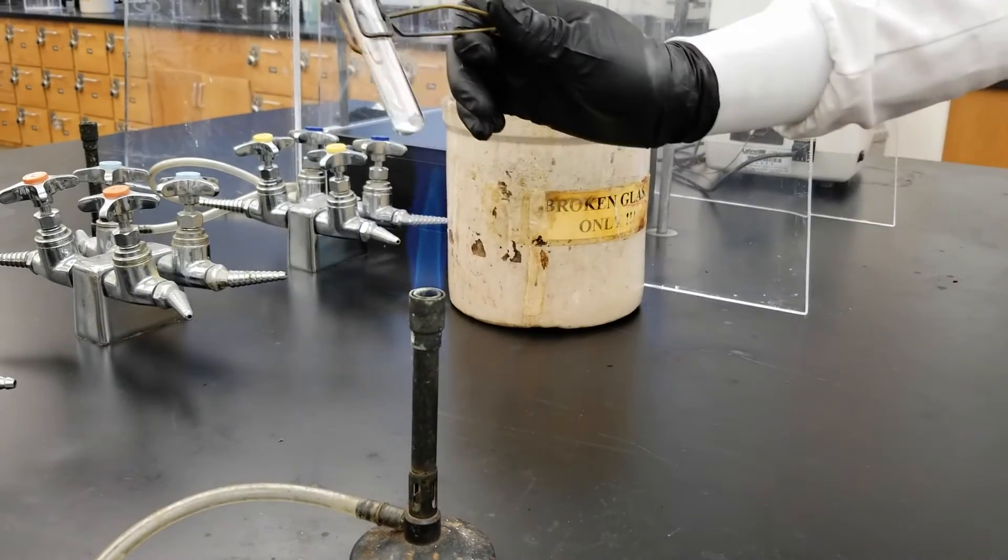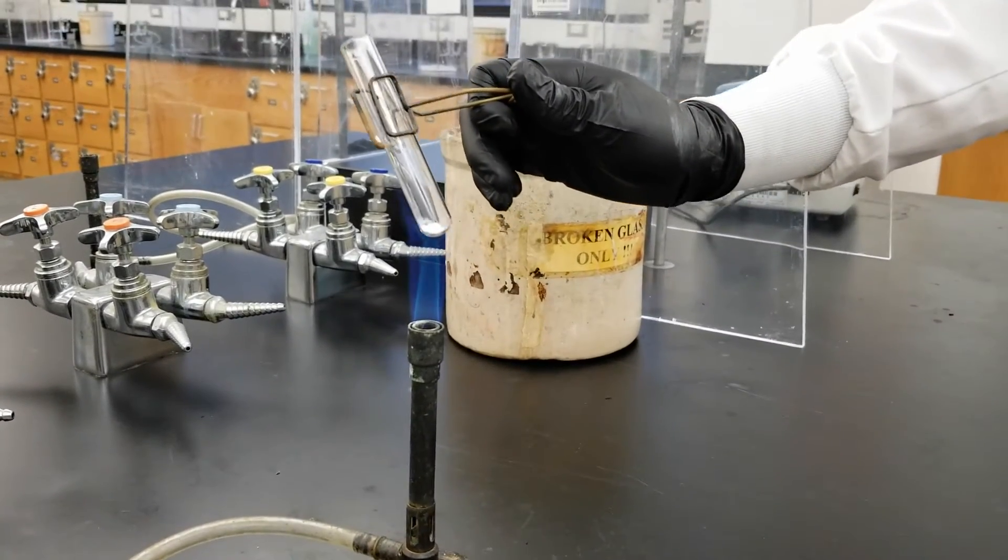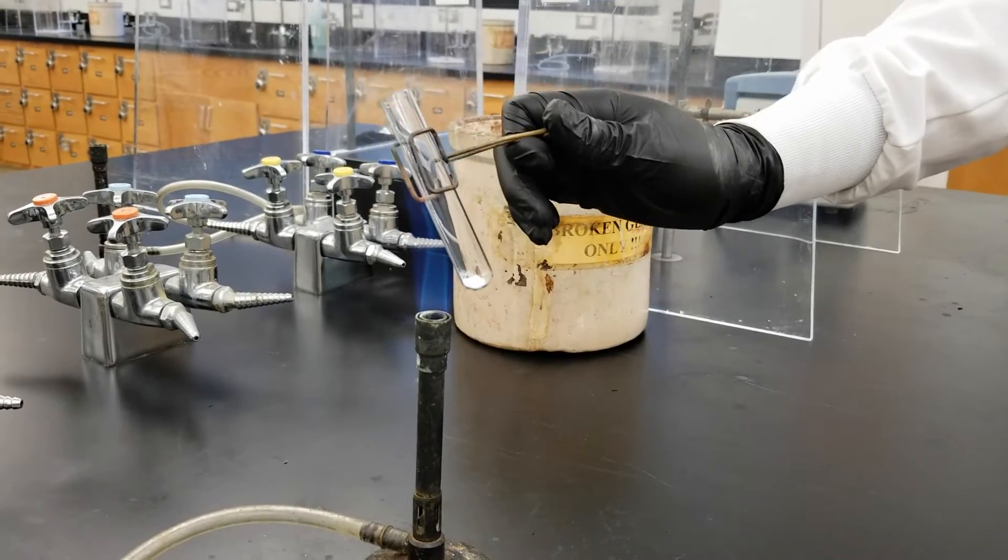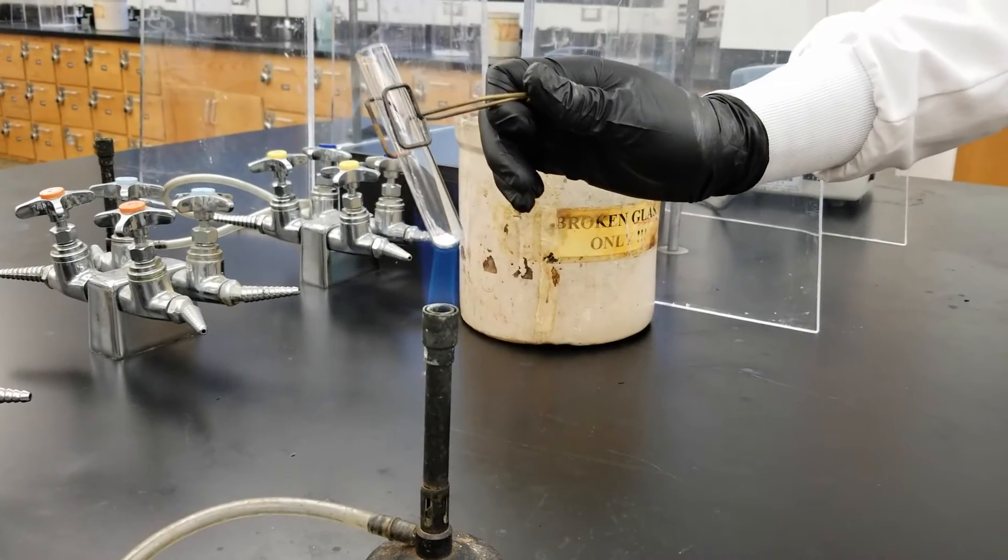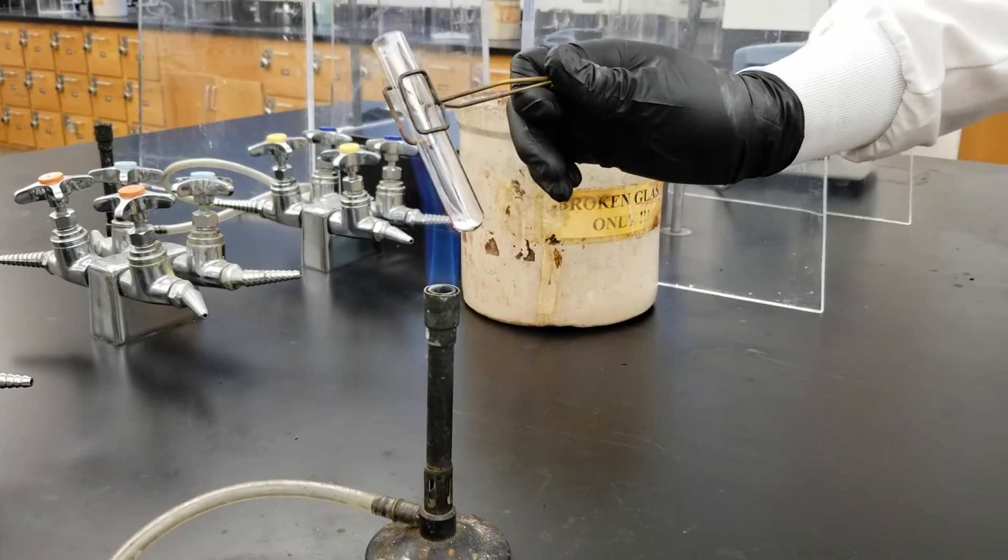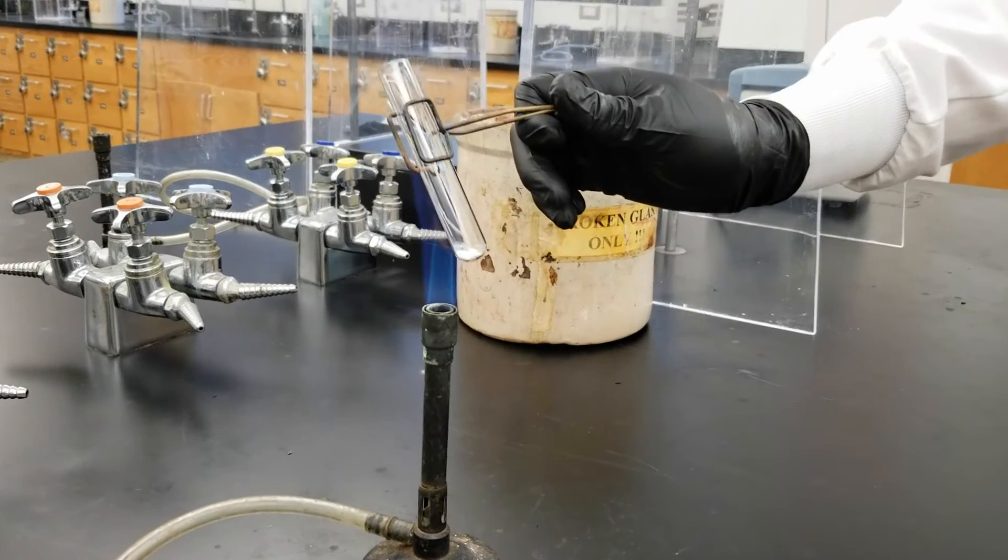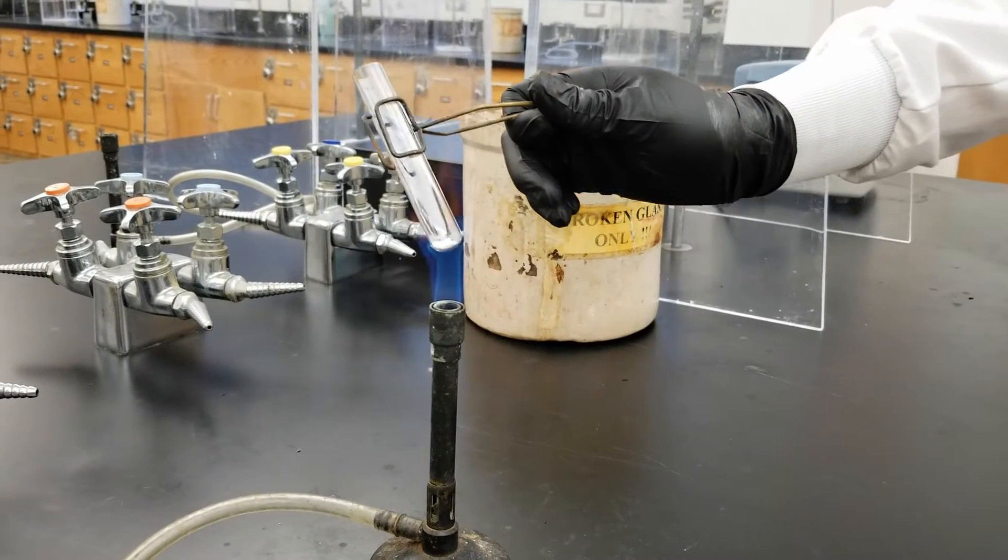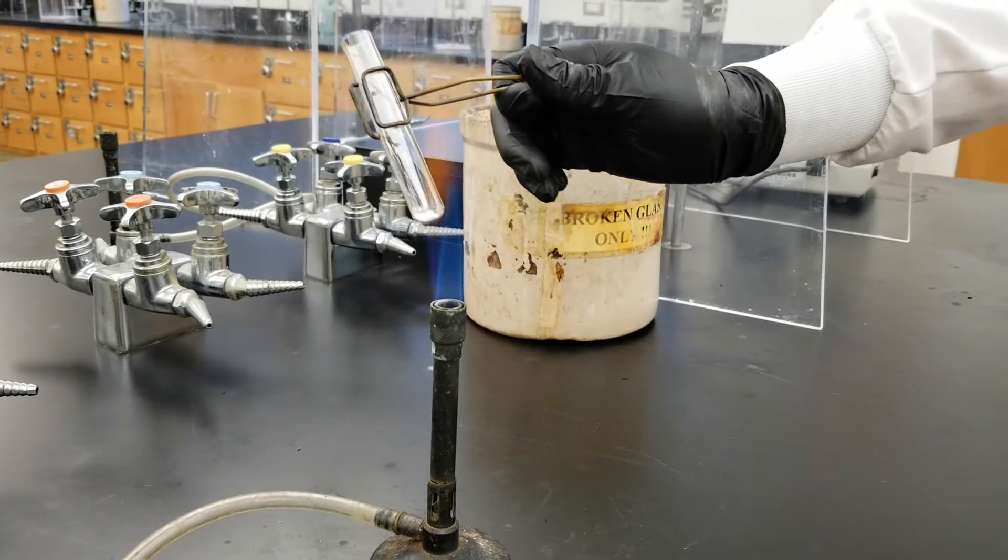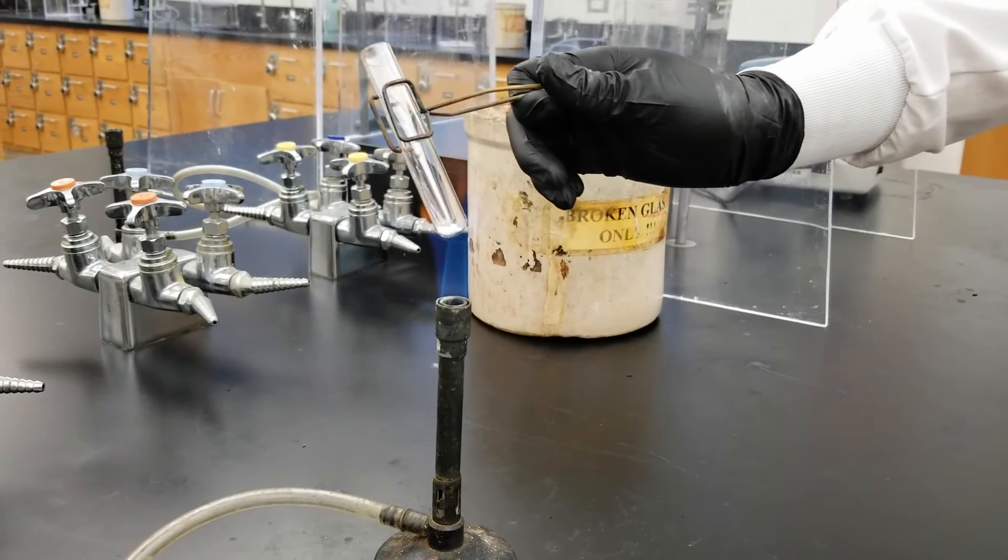To heat your test tube you'll use a test tube clamp and you'll hold the test tube at the tip of your flame and move the flame along the length of the test tube so it's not concentrated in just one spot. If it's in just one spot it can cause the glass to shatter. Also holding the test tube at a 45 degree angle will make the heating process easier. Make sure when you do this that the opening of the test tube isn't pointed at you or your lab partner or anyone else.